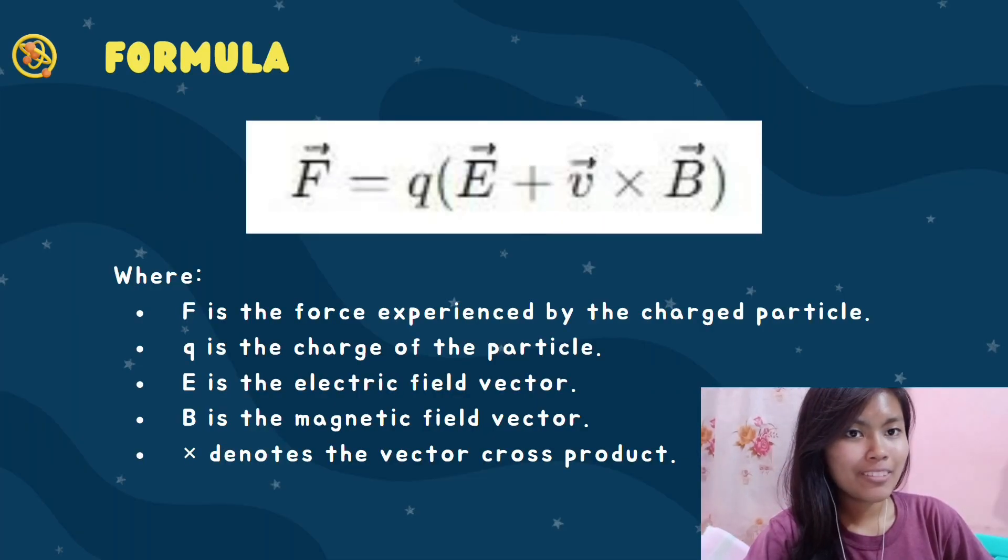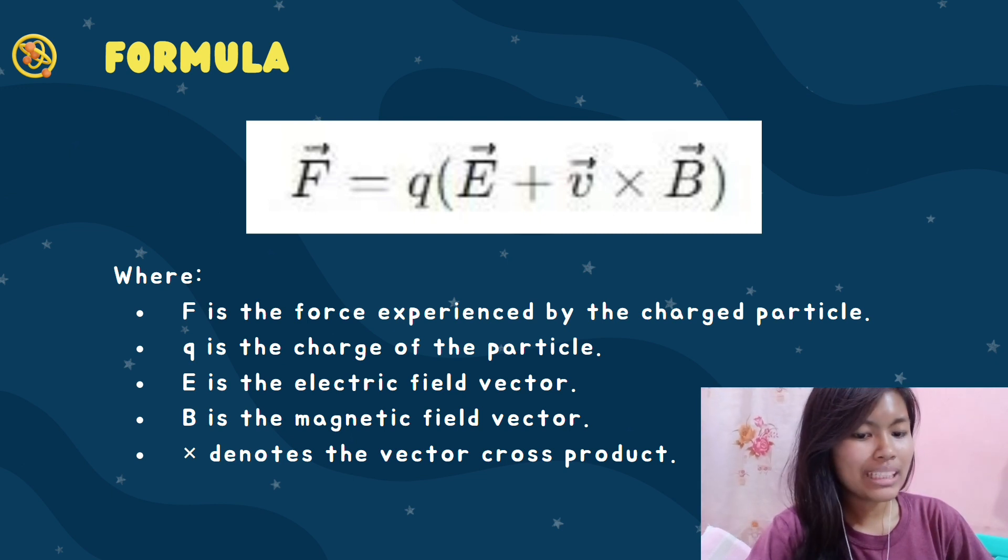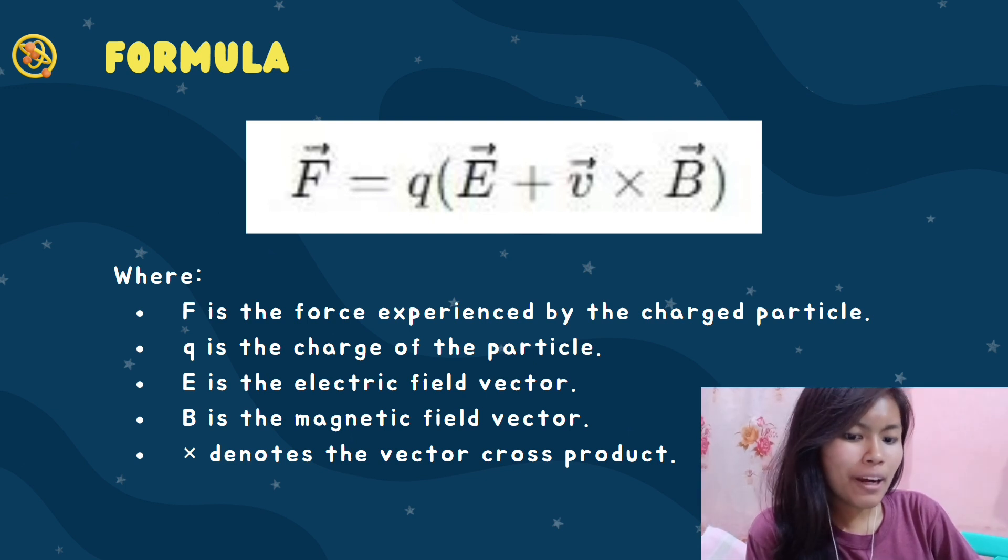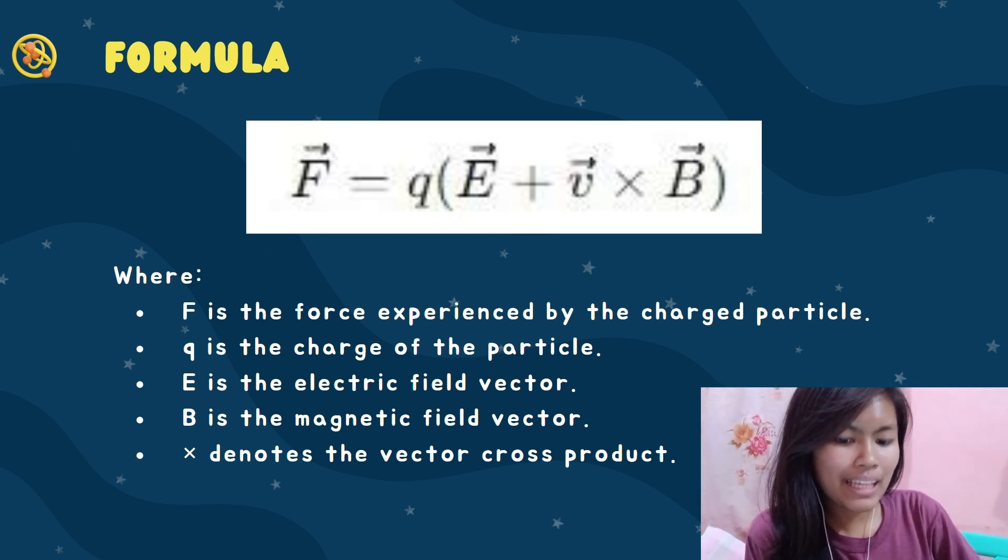Hi, I'm Les and Ogavia, and now let's move on to the Lorentz Force Formula. We have here the picture of the formula and the legends, wherein F is the force experienced by the charged particle, Q is the charge of the particle, E is the electric field vector, B is the magnetic field vector, and last but not least is the X denotes the vector cross product.